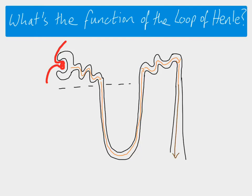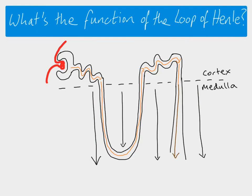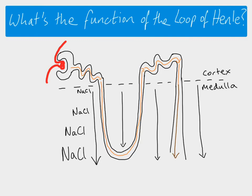So the role of the loop of Henle therefore is to achieve that very high concentration. What it actually does is it creates a gradient — a fairly low concentration of salts at the top of the medulla near the cortex, and as you move down deeper through the medulla that concentration of solute increases until you have a very high concentration of solutes down here, which is where you find the hairpin part of the loop of Henle.